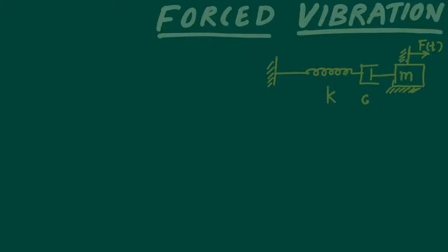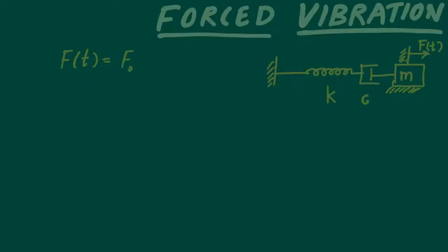Here is a simple single-degree-of-freedom system. The excitation force F(t) can be written as F(t) = F₀ cos(ωt), where F₀ is a constant value. This means I am applying a harmonic excitation to the system.